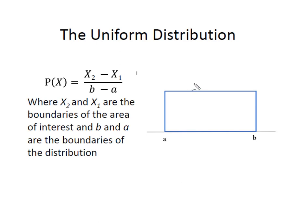Let's say that I was looking at the area between here and here. I wanted to find out what's the probability that I see a value of x that falls between these two points on the distribution. This will become x2, this will become x1. And I'll simply determine the distance between x2 and x1 and divide it by the entire width of the distribution by subtracting a from b.